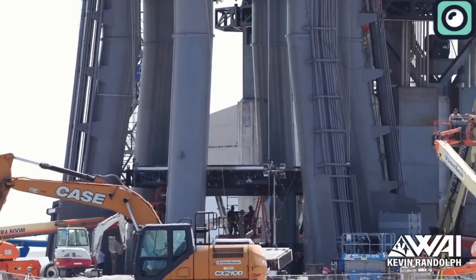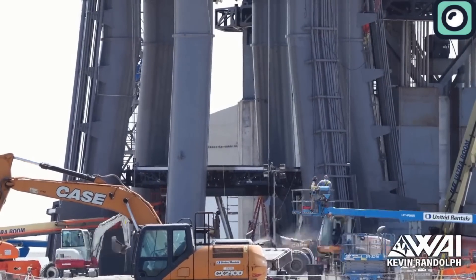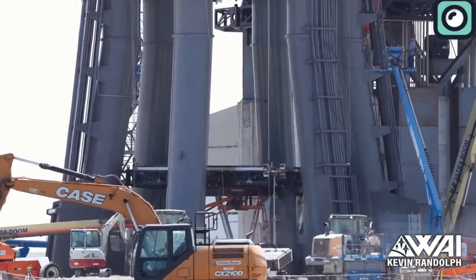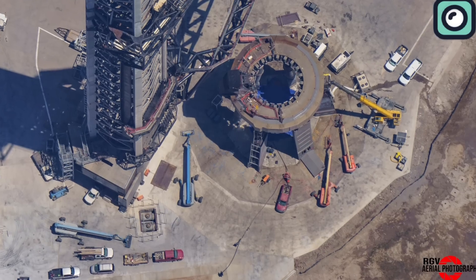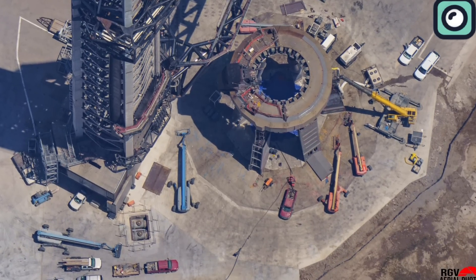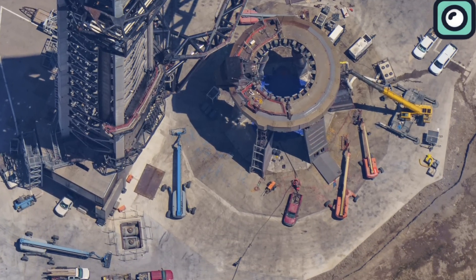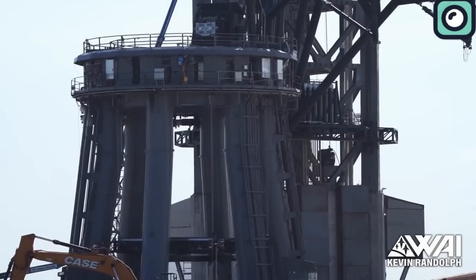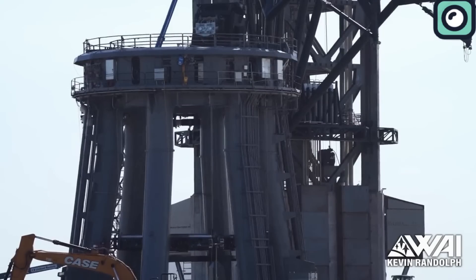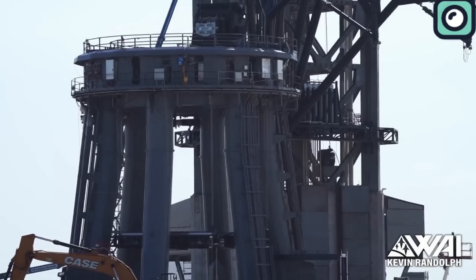The first step was reinforcing the base with six concrete pillars designed to withstand the massive thrust of the super-heavy booster. Each pillar was built with steel rebar and filled with concrete, creating a robust foundation that could handle the enormous stresses expected during launches.